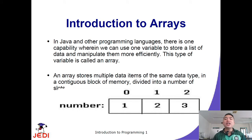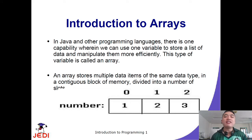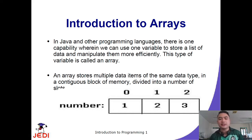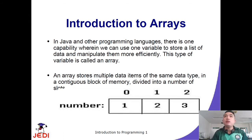In Java and other programming languages, there is a capability where you can use just one variable to store a list of data and manipulate them more efficiently using one identifier. We call this an array. An array stores multiple data items of the same data type, and it is stored in a contiguous block of memory divided into a number of slots.